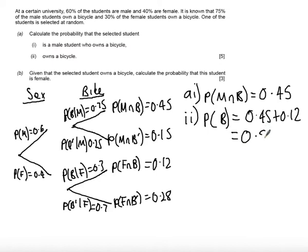Part B is really the A-level part of material on this question. Up until this point you're looking at really a GCSE higher tier question. It says here: given that the selected student owns a bicycle, calculate the probability that the student is female. So what we're saying is probability the student is female given that they own a bike.